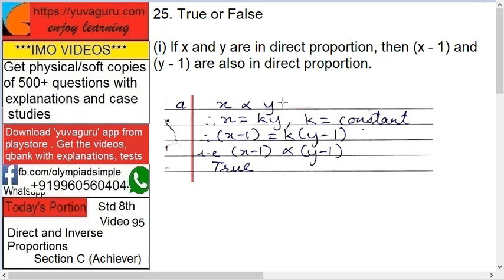So it becomes, let's take 2 outside, 2 into K Y. But what is K Y? K Y is X. So it equals 2 into X. So X also becomes 2X. So it means X also doubles.